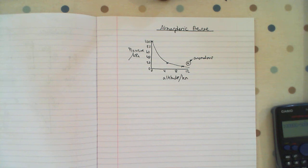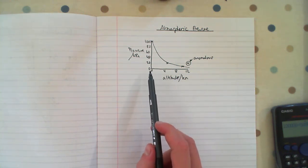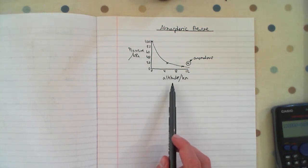This is a revision video for atmospheric pressure and this is for triple students only. Here I've got a sketch graph of pressure on the y-axis and altitude on the x-axis. Altitude means how far above the Earth's surface at sea level you are.